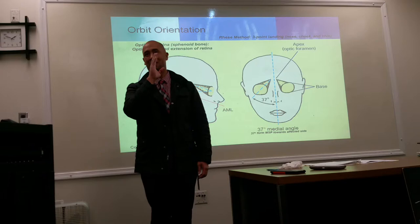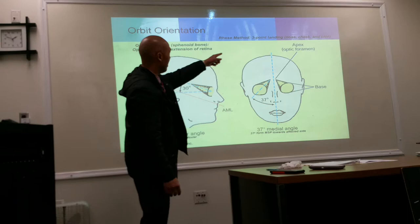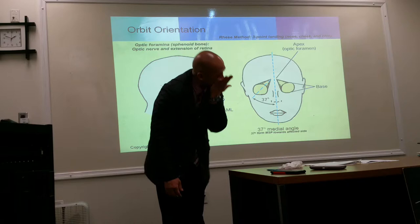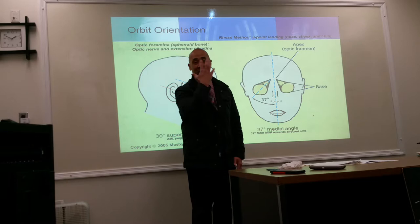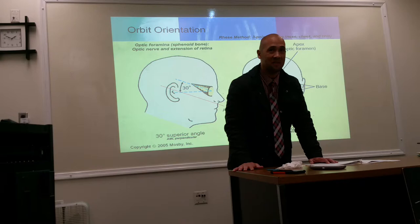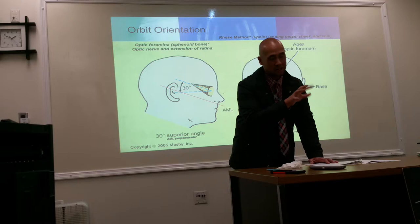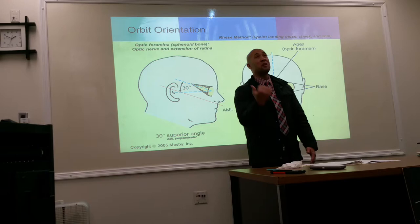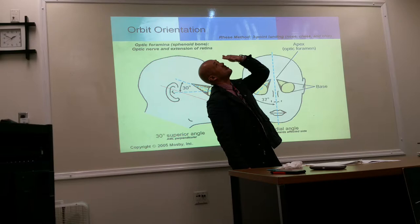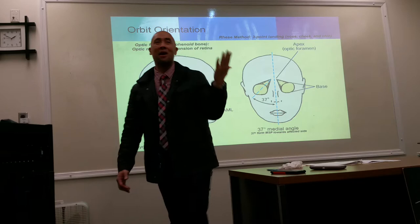The shortcut is the three-point landing: nose, cheek, and chin must all touch the image receptor flat surface simultaneously. If the patient cannot lie face down, you do the opposite — AP — but still maintain the same angulation and imagine that flat surface across nose, cheek, and chin. We will practice this in the lab.